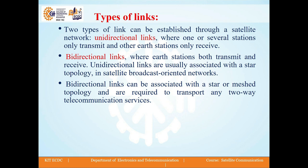There are two types of links that can be established through a satellite network: unidirectional and bidirectional. In unidirectional links, one or several stations only transmit and other earth stations only receive — meaning communication is only one way. Unidirectional links are usually associated with a star topology in satellite broadcast-oriented networks. Bidirectional links can be associated with a star or mesh topology and are required to transport any two-way telecommunication services.